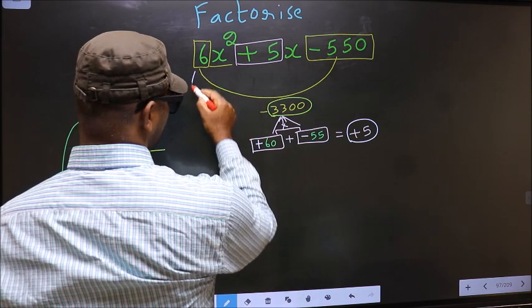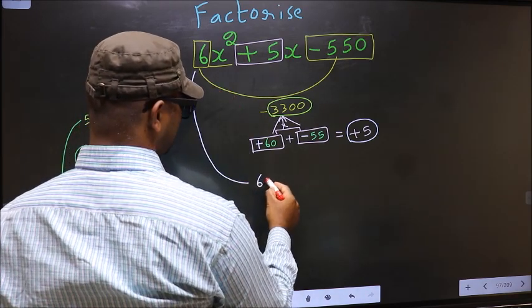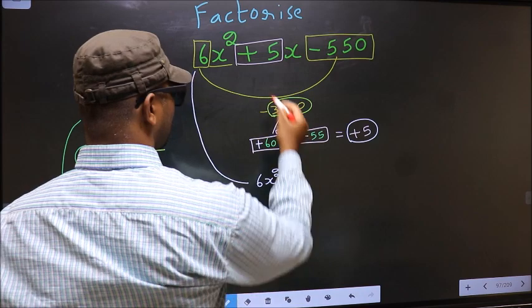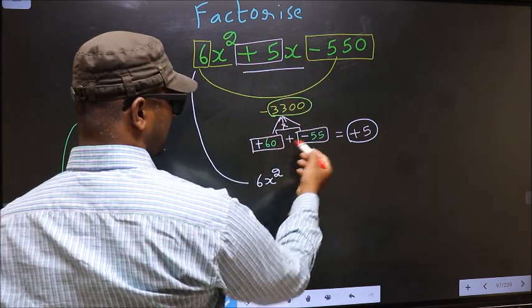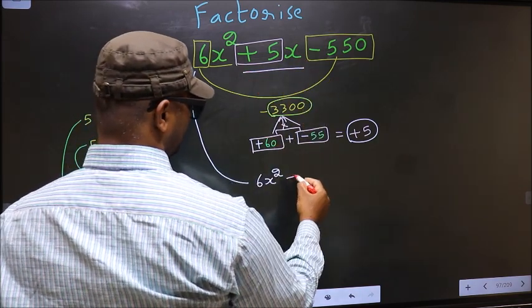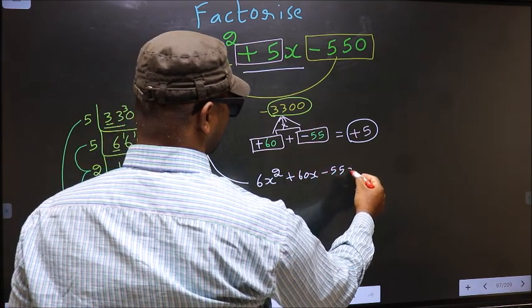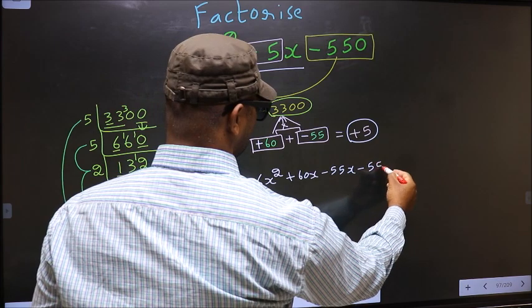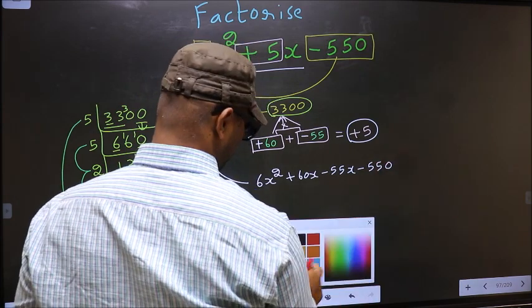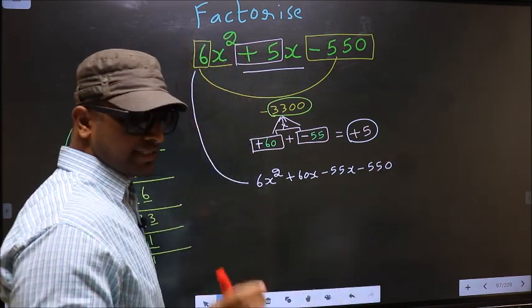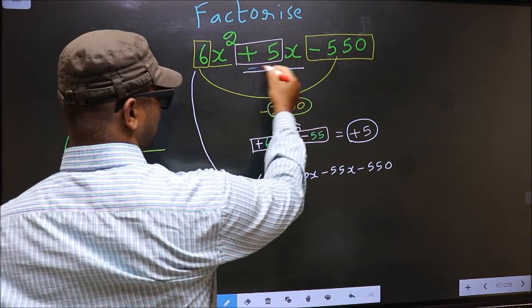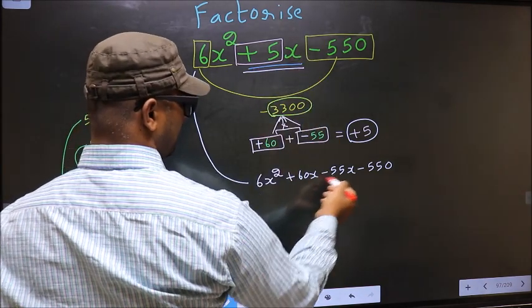Now you should change this to 6x square. In place of plus 5x, now we should write this: plus 60x minus 55x minus 550. Did you understand? In place of plus 5x, we have written this.